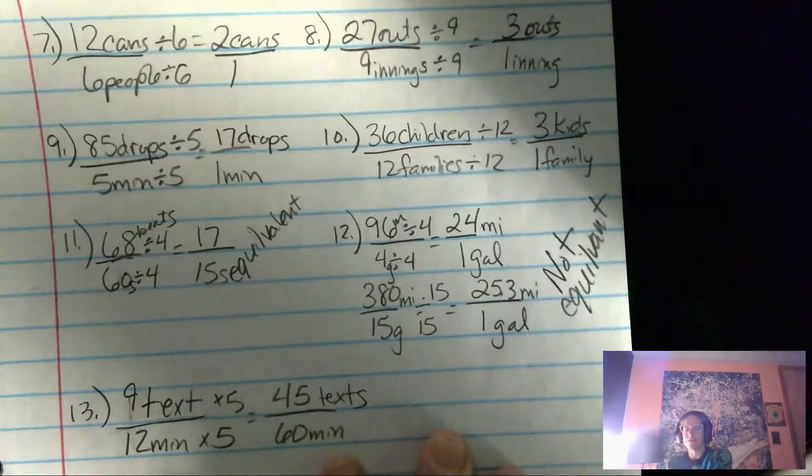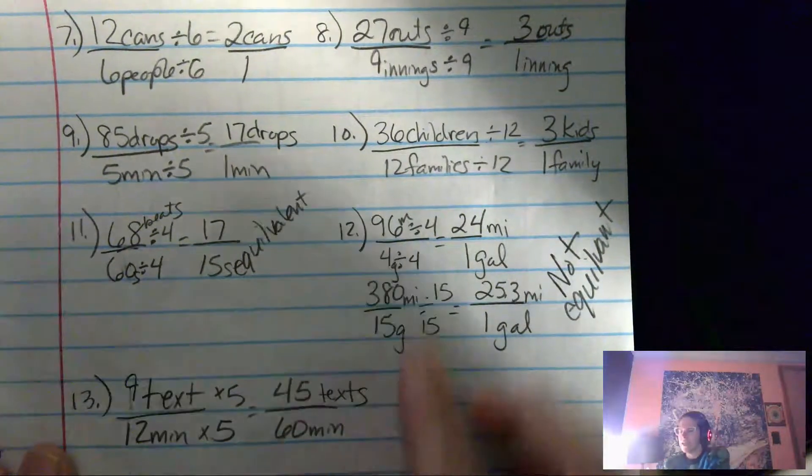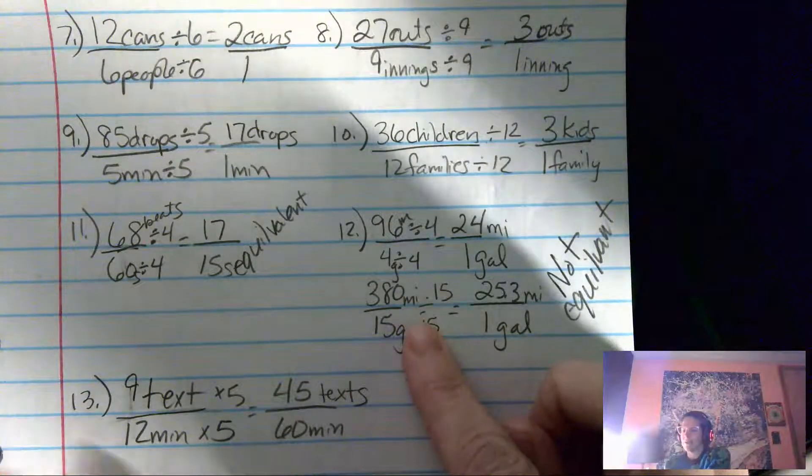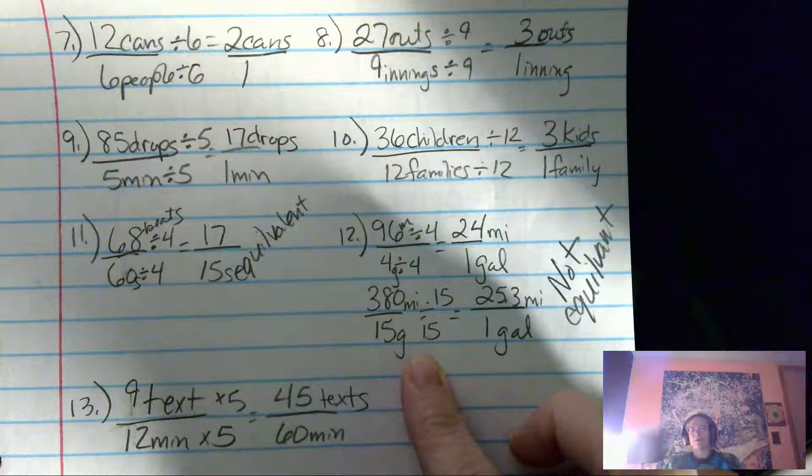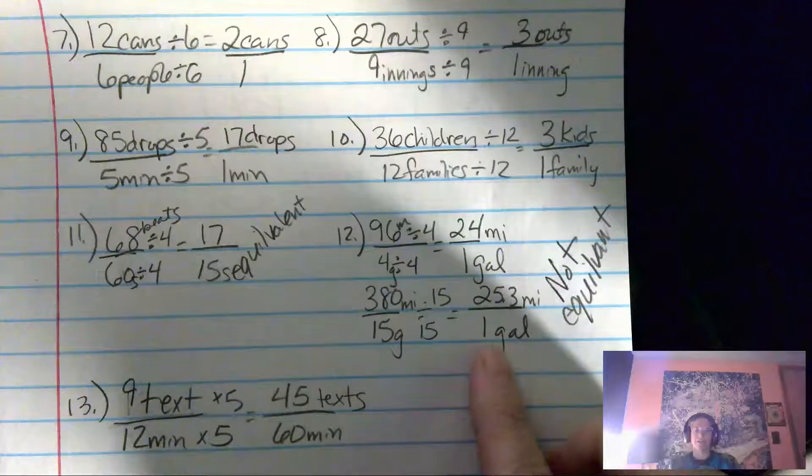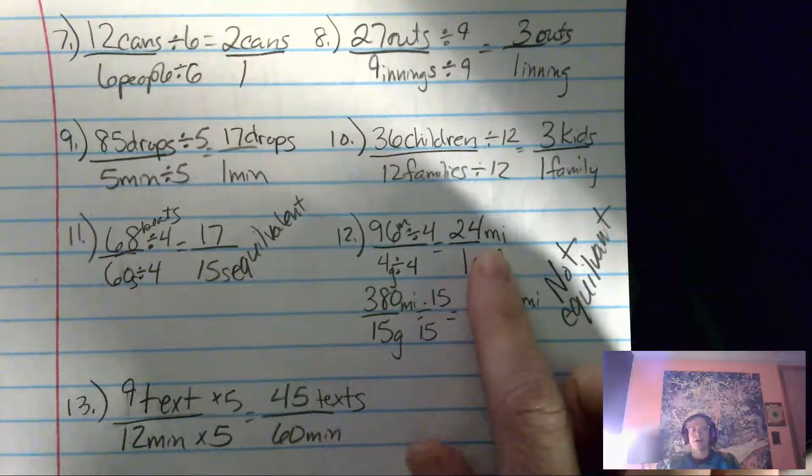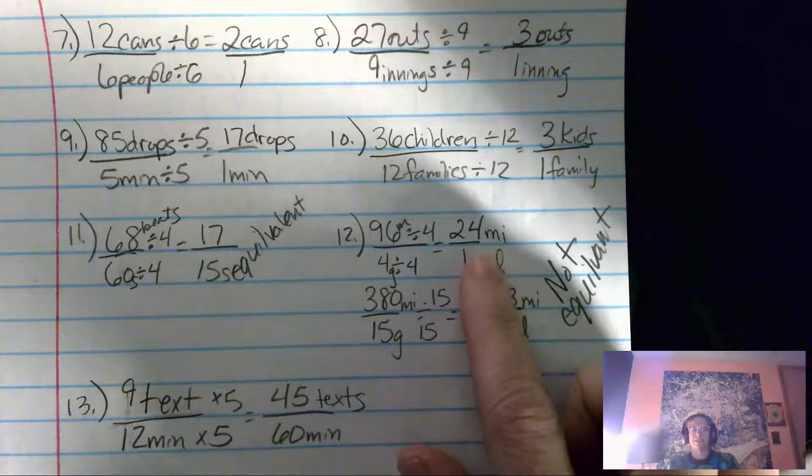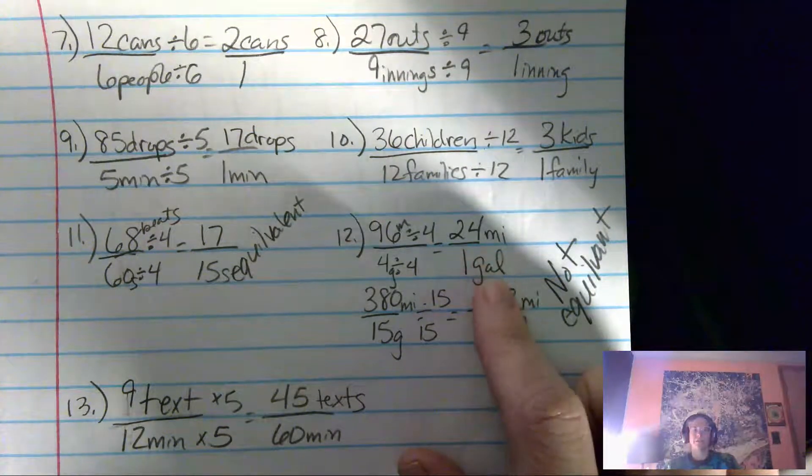But number 12 is not equivalent. So with 96 miles per four gallons or 380 miles per 15 gallons, I could have done a couple of different things to find out if the rates are the same, but I just decided I was going to try to turn it into unit rate. So 96 miles per every four gallons averages out to 24 miles per gallon,